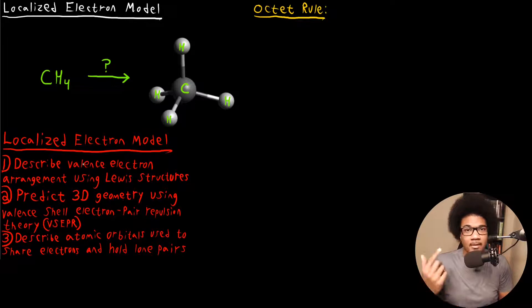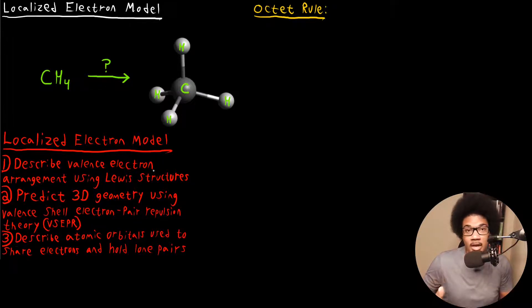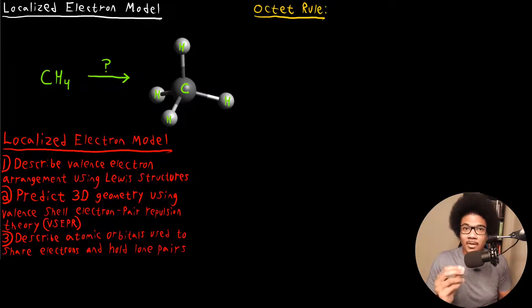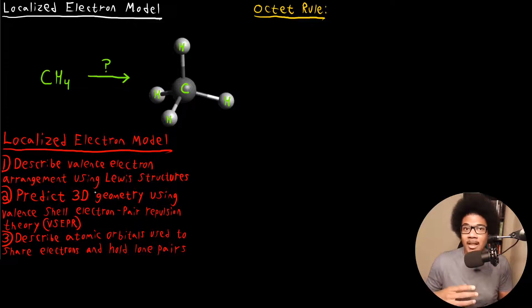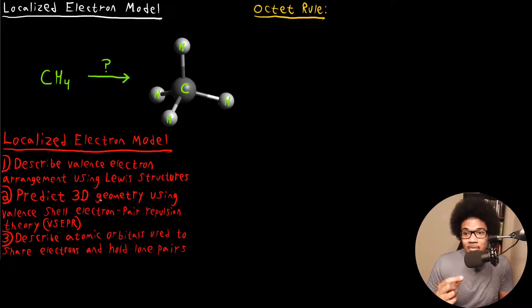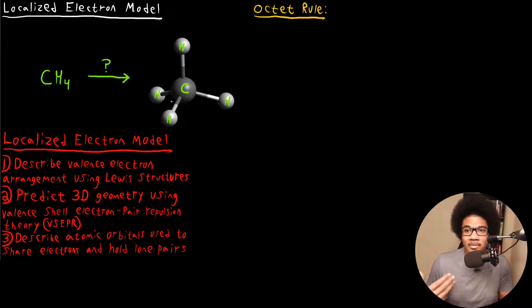Figure out how many valence electrons you have and where they're going to be — that's the main purpose of Lewis structures, which we'll introduce in a moment. The second piece of the localized electron model is to predict the three-dimensional geometry using valence shell electron pair repulsion theory, or VSEPR theory. Every molecule orients itself differently in three-dimensional space, and we can use the Lewis structure and VSEPR theory to predict what that three-dimensional structure looks like. That's why methane has its exact three-dimensional structure — VSEPR theory — and we'll cover that in unit two.